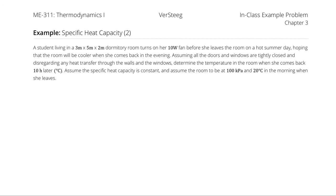A student living in a 3-meter by 5-meter by 2-meter dormitory room turns on her 10-watt fan before she leaves the room on a hot summer day, hoping that the room will be cooler when she comes back in the evening. Assuming all the doors and windows are tightly closed and disregarding any heat transfer through the walls and windows, determine the temperature in the room when she comes back 10 hours later. Assume the specific heat capacity is constant and assume the room to be at 100 kilopascals and 20 degrees Celsius in the morning when she leaves. I will begin with a system diagram.